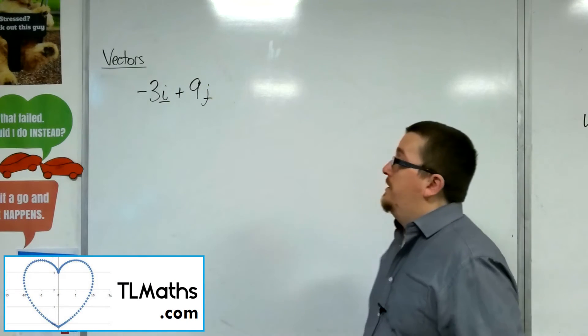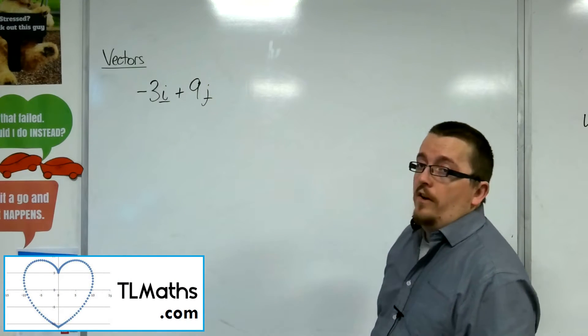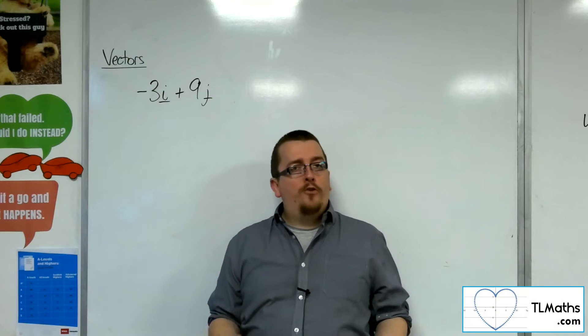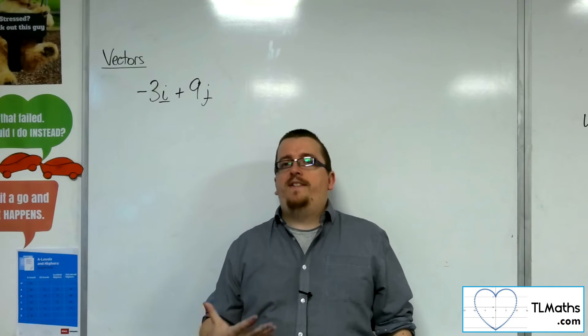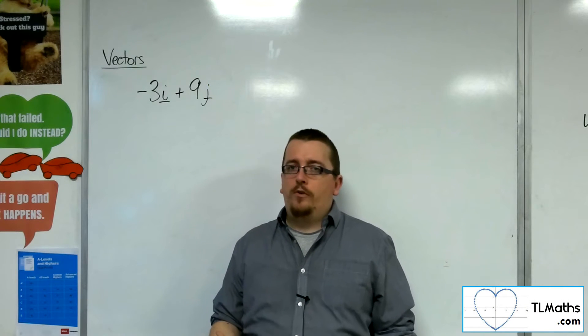OK, so let's say I've got a vector minus 3i plus 9j, which is in component form, and I want to write it in magnitude direction form.